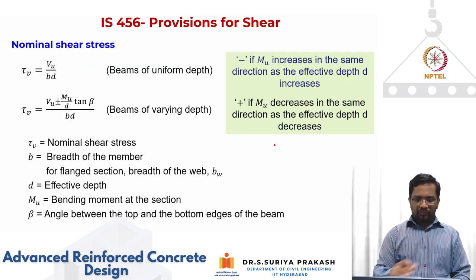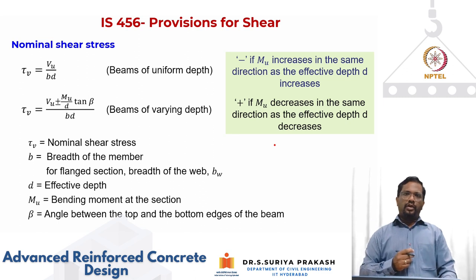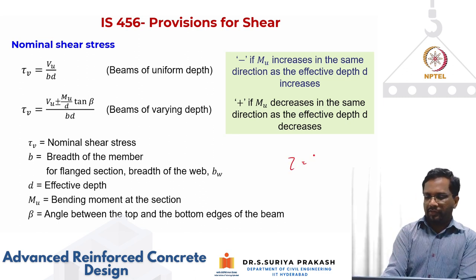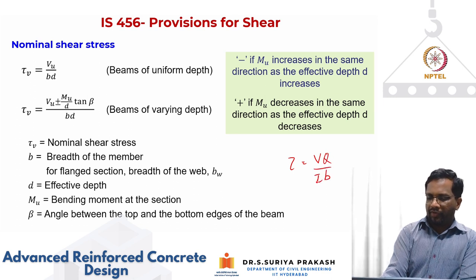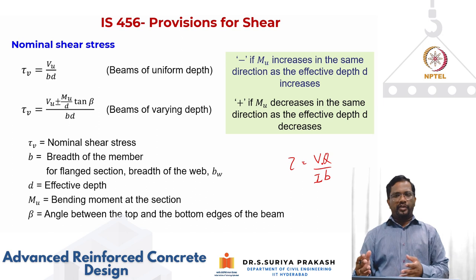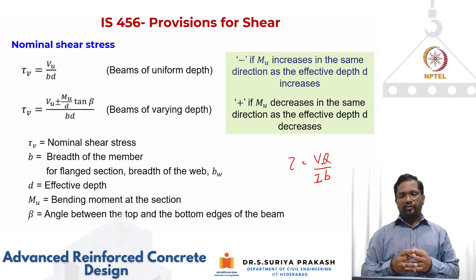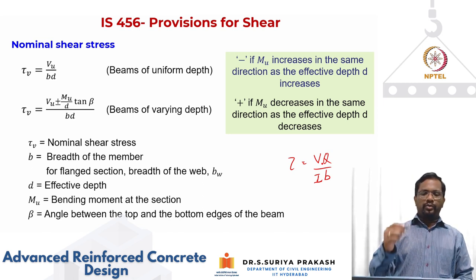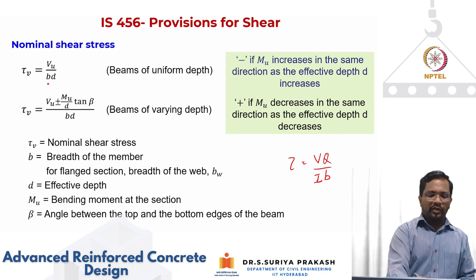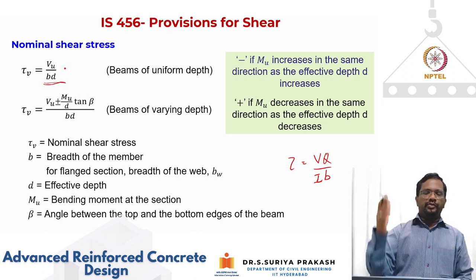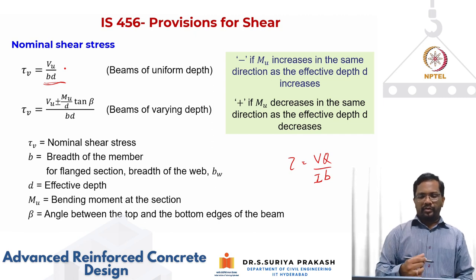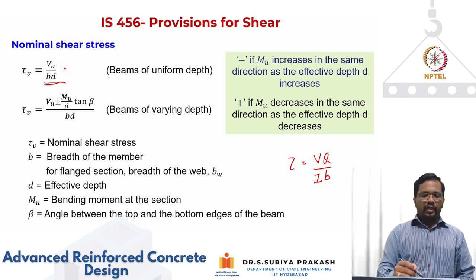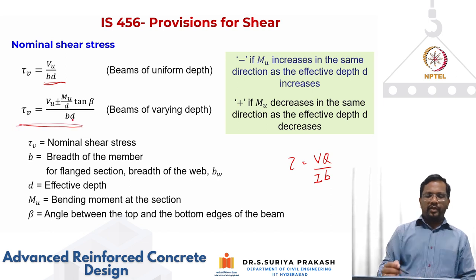For shear stress, the elastic formula is tau = VQ/Ib, but reinforced concrete is neither elastic nor plastic. The code says not to worry about the exact shear distribution — instead calculate the nominal shear stress in an average sense: if you know the shear demand, divide by breadth and effective depth of the member to get your nominal shear stress.